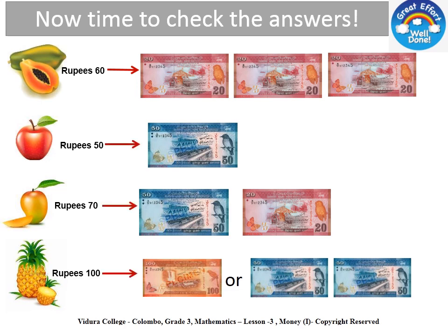Shall we check the answers? The first item is a pepo which is 60 rupees — you can represent it using three 20 rupee notes. The second item is an apple which is 50 rupees — you can represent it using a 50 rupee note. The third item is a mango which is 70 rupees — you can represent it using a 50 rupee note and a 20 rupee note. And the last item, pineapple which is 100 rupees, you can either represent it using a 100 rupee note or two 50 rupee notes. Did you get all the answers correct? Well done! Great job!